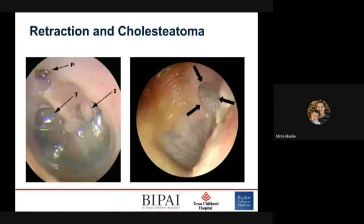Looking at reference photos: on the left is a picture of a retraction of the tympanic membrane — in the superior portion (the pars flaccida), the tympanic membrane instead of being a normal convex shape is being sucked inward. On the right is a cholesteatoma. You want to be worried about cholesteatomas because the squamous epithelium can go on to erode everything in the area — they keep expanding and will destroy what's in their way, including the middle ear bones and nearby structures.